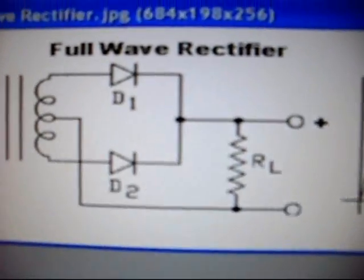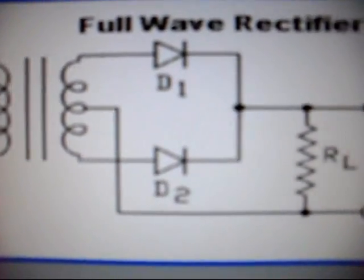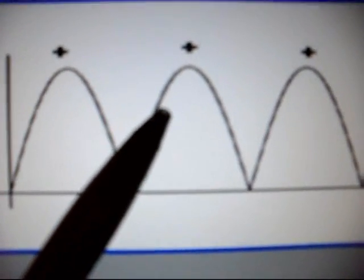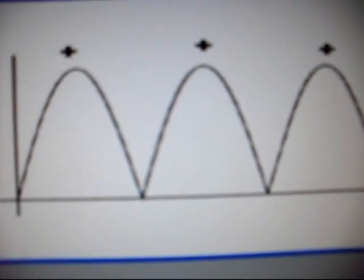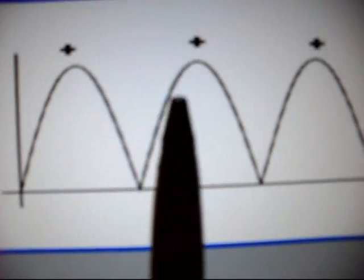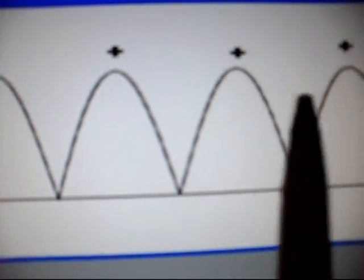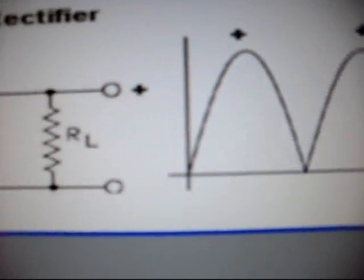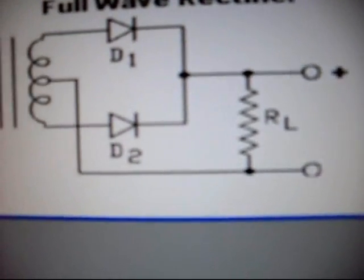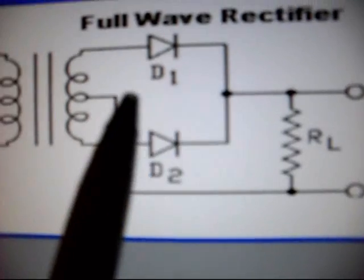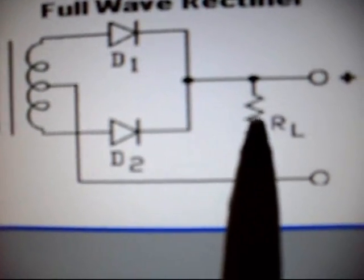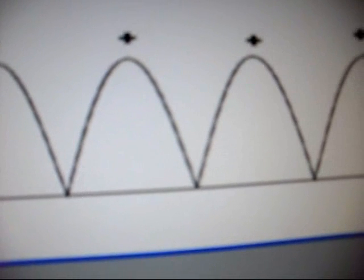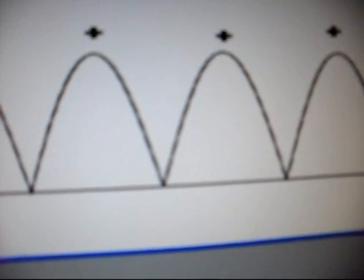This figure shows the output waveform of a full-wave rectifier. You will note that the pulsations occur twice as often in this figure as they did in the half-wave rectifier figure. A higher rate of pulsations is easier to smooth out. It is for this reason that a half-wave rectifier is rarely used.